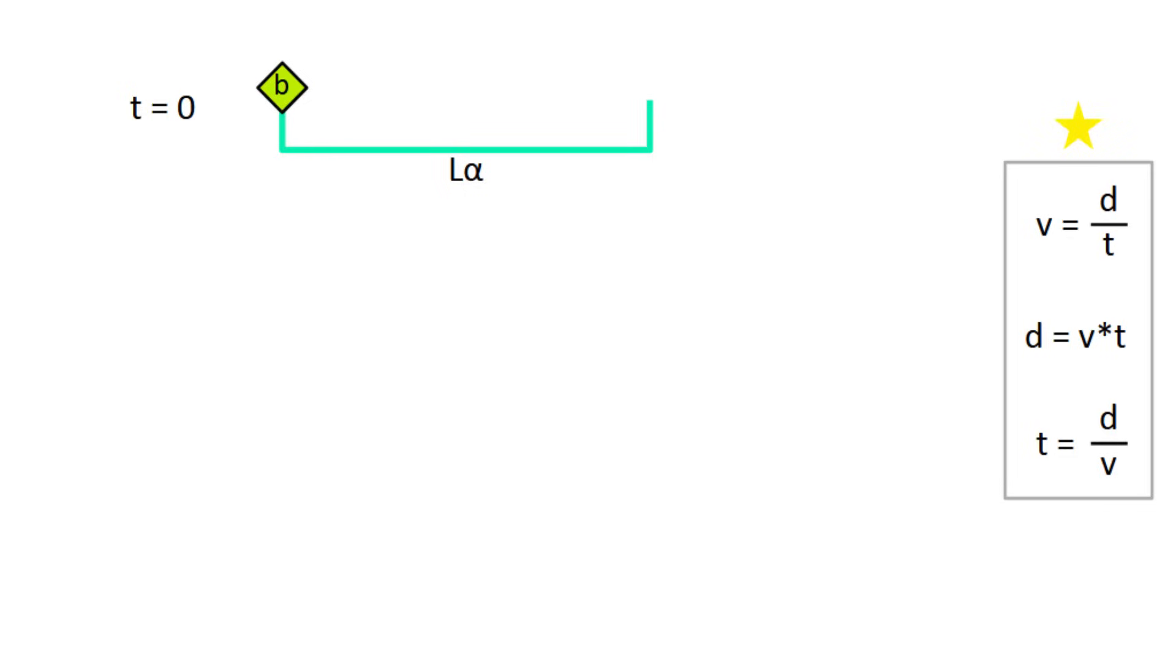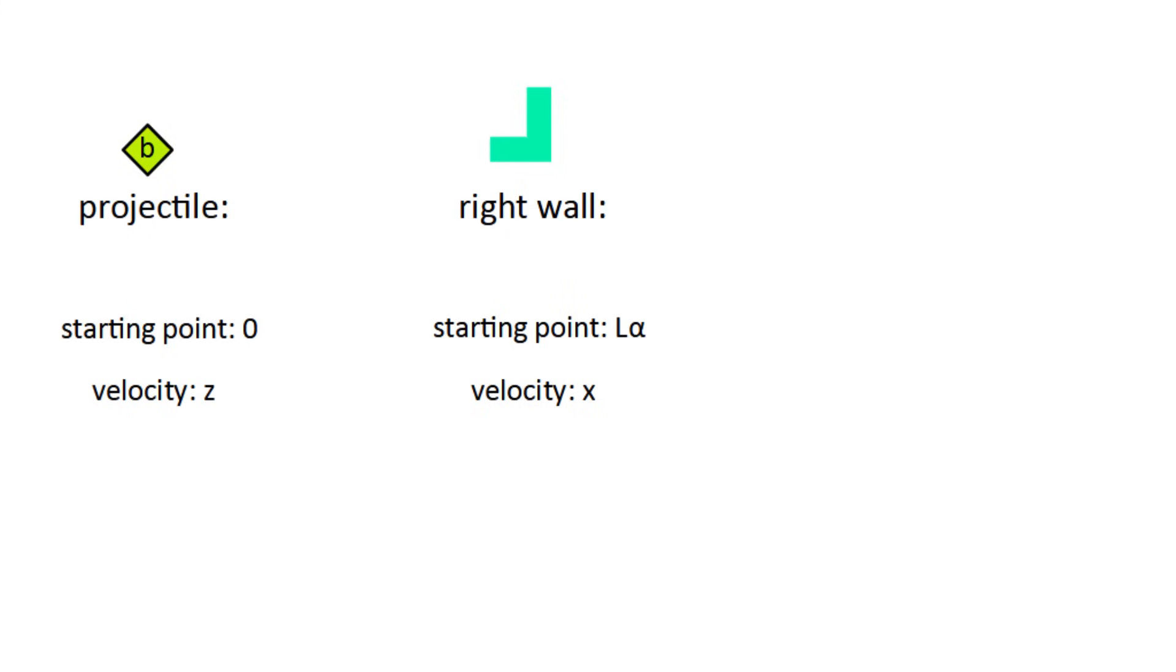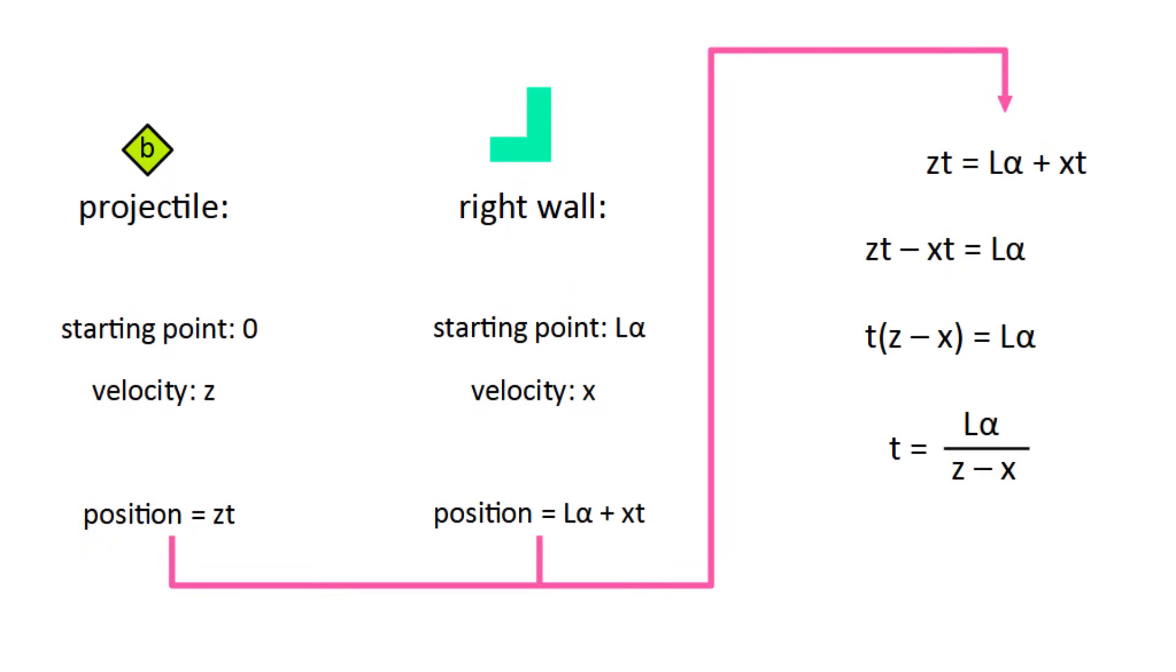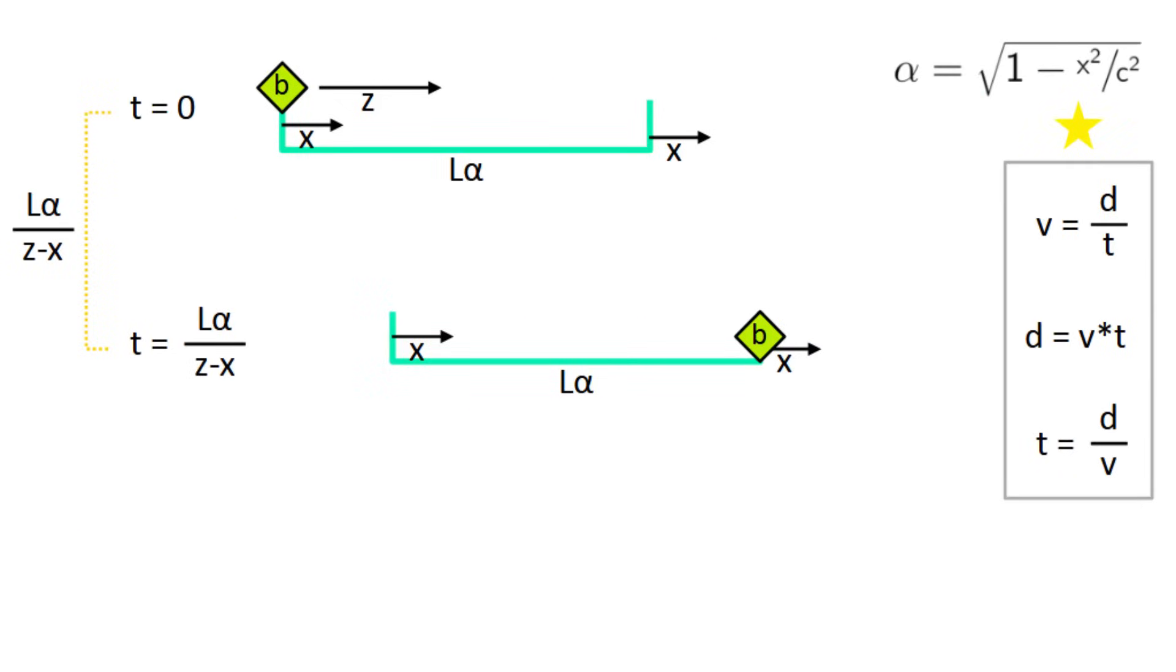Since the box is moving in this reference frame, its length is contracted to l times alpha, where alpha is square root of 1 minus x squared over c squared. The projectile moves at z, and the right side of the box moves at x, but starts l times alpha distance to the right. So to find when the projectile reaches the right wall, we just have to make equations for both positions and find when they're equal. Solving this, we find it will hit the wall at l times alpha over z minus x time, after which it sends the signal.